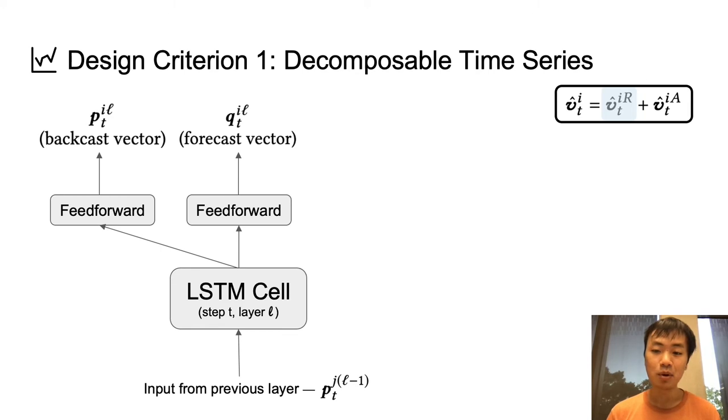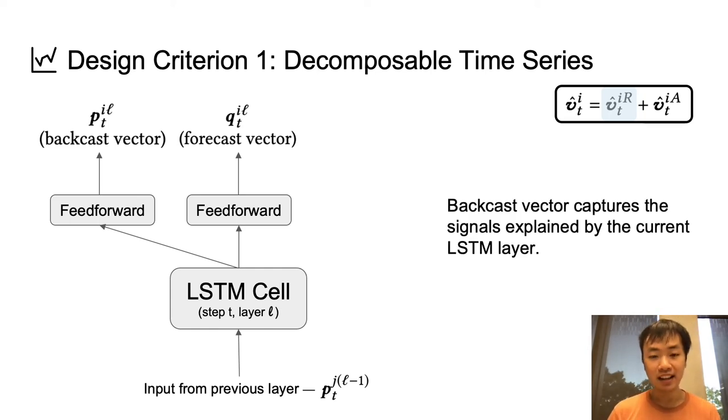Furthermore, we will use a concept called residual fitting. This idea might be familiar if you have seen gradient boosting before. Usually, the input to an LSTM layer is simply the output from the previous layer. However, in RADflow, the input to an LSTM layer is going to be the input from the previous layer minus the so-called backcast vector. Intuitively, under this design, we can interpret the backcast vector as capturing the signals that are explained by the current layer. And when we subtract this away, the next LSTM layer only needs to worry about explaining the residual signals.